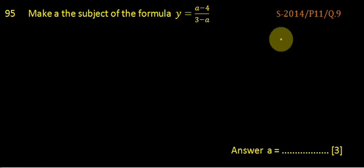Question number 95, variant one, June 2014. Make A the subject of the formula Y equals A minus 4 divided by 3 minus A.